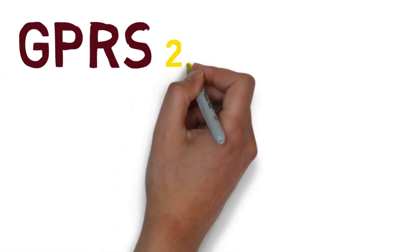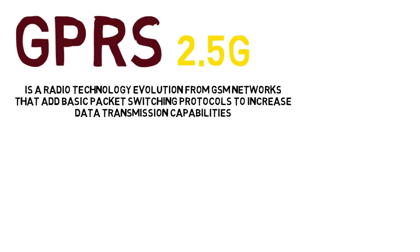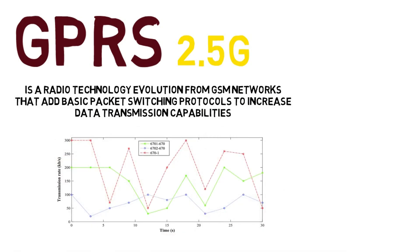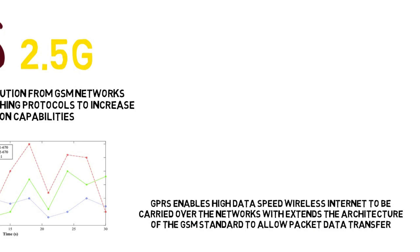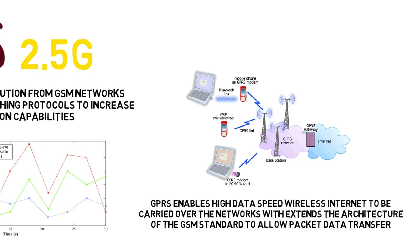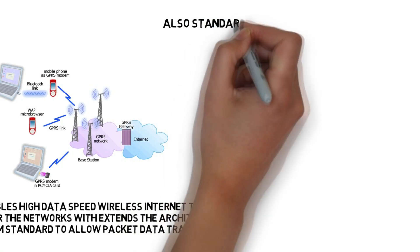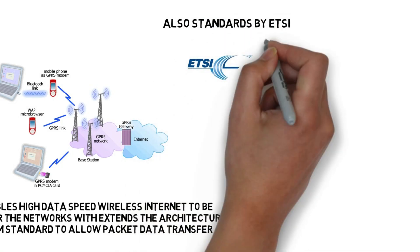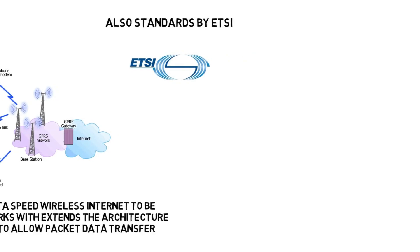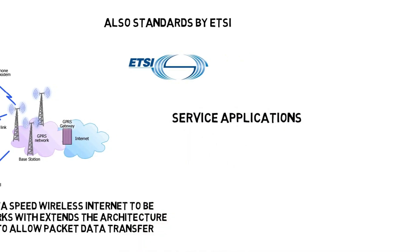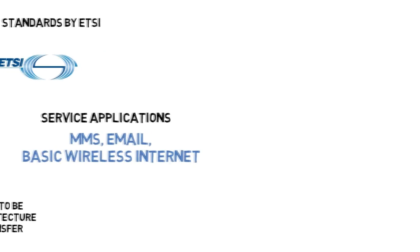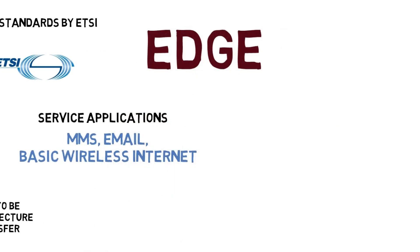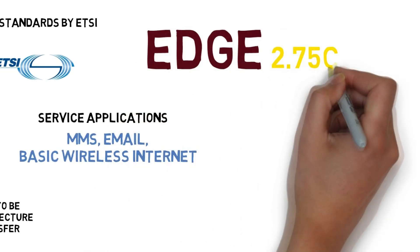GPRS, considered 2.5G, is a radio technology evolution of GSM networks. GPRS enables high-speed wireless internet to be carried over the network, which extends the architecture. It is also standardized by ETSI. Service applications include MMS, email, and basic wireless internet.